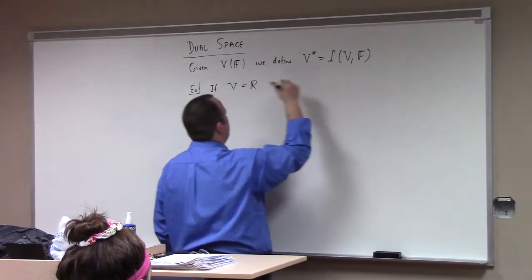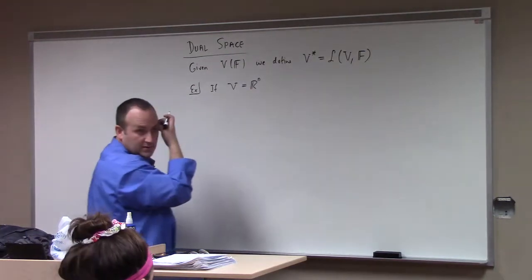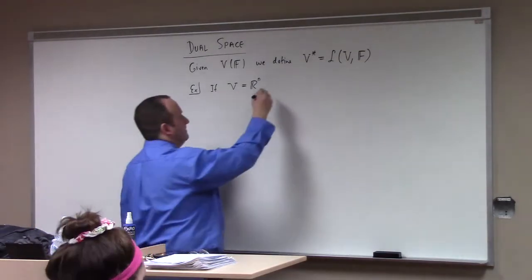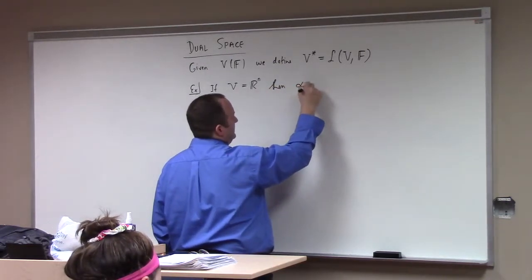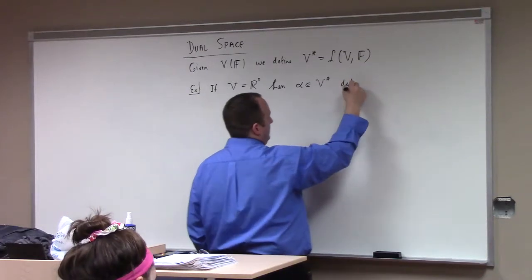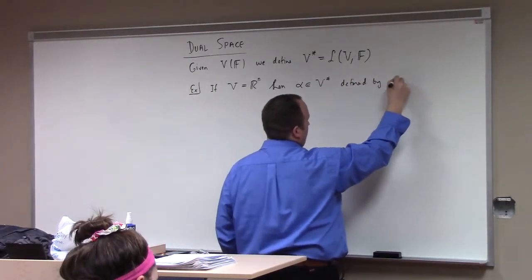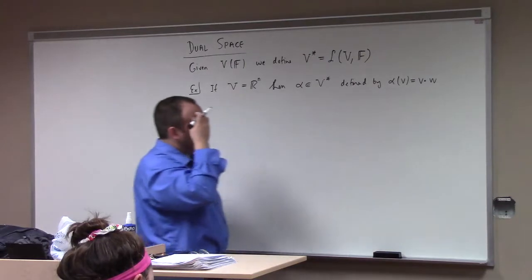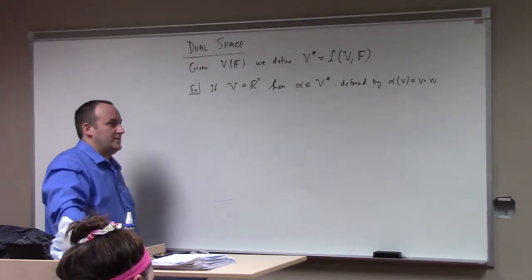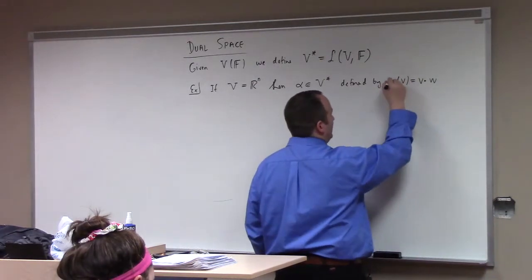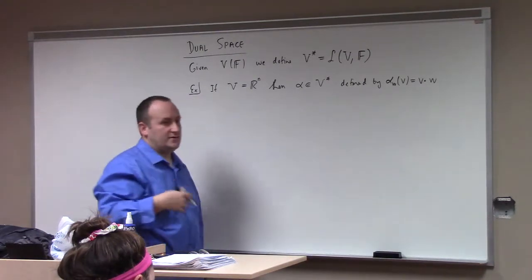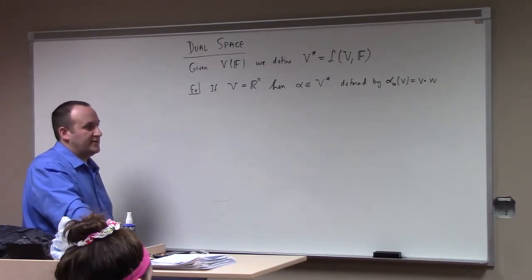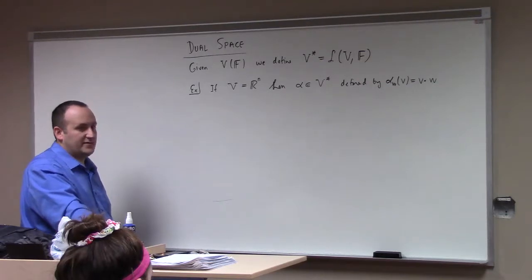So for example, if V equals R^n, then alpha is in V-dual defined by alpha of v equals v dot w. This defines alpha — that makes alpha a dual vector. You could say alpha sub w if you want, where alpha sub w is the dual vector which corresponds to w. The formula for alpha sub w is just v dot w. The fact that this is linear follows from the properties of the dot product.